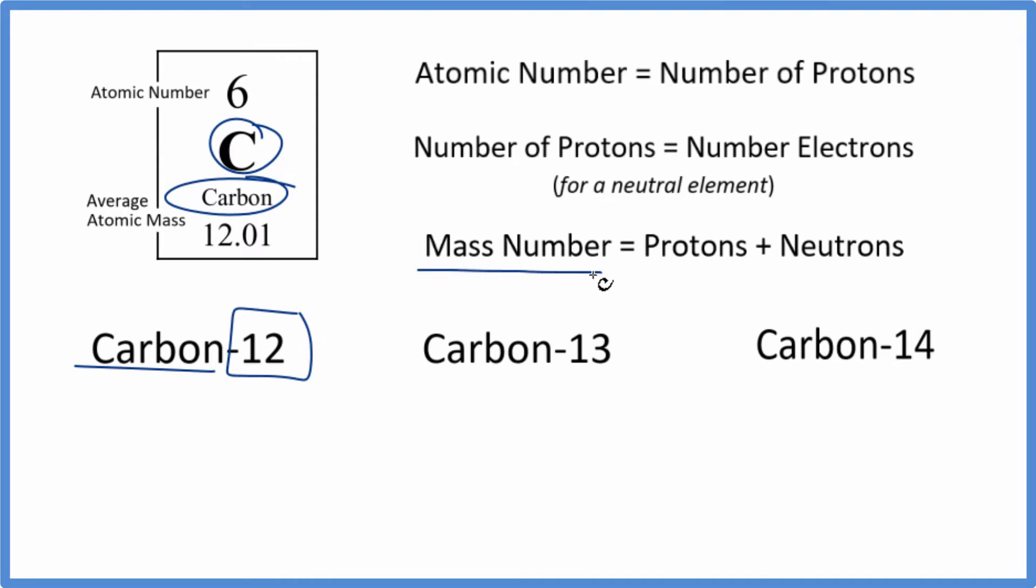12 is the mass number, the number of protons plus neutrons. So carbon 12 means the protons plus neutrons equals 12. Carbon 13, we have a mass number of 13, and then carbon 14, mass number of 14.